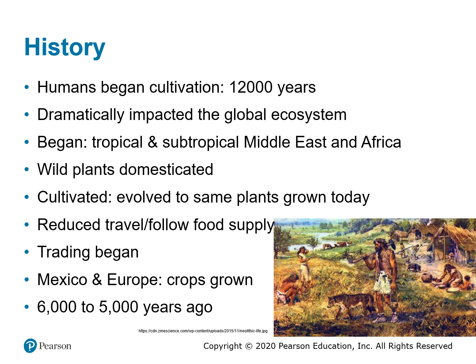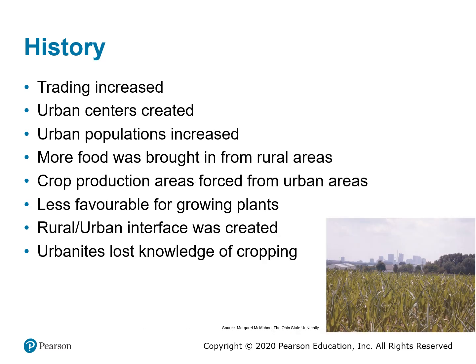Cultivation reduced the need to travel or follow the food supply, and as a result, trading began. About 6,000 to 5,000 years ago, different crops were being grown in Mexico and Europe, and this developing lifestyle was starting to have an effect on global ecosystems. As trading increased, it created urban centers, and as urban populations increased, more food was brought in from rural areas, forcing crop production areas away from cities, often into areas less favorable for growing plants.